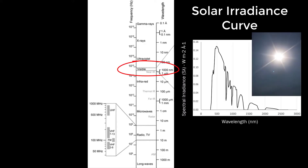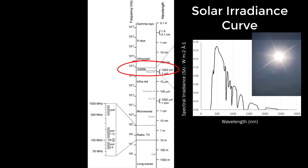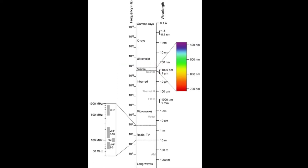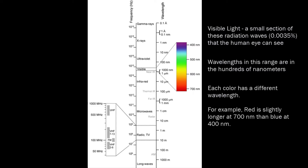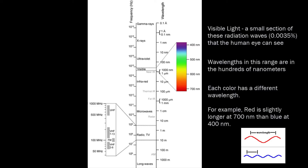Within the solar energy range is a small band of radiation waves that the human eye can see. The wavelengths in this range are just several hundreds of nanometers, and each color has a different wavelength. For example, red is slightly longer at 700 nanometers, while blue is at about 400 nanometers.